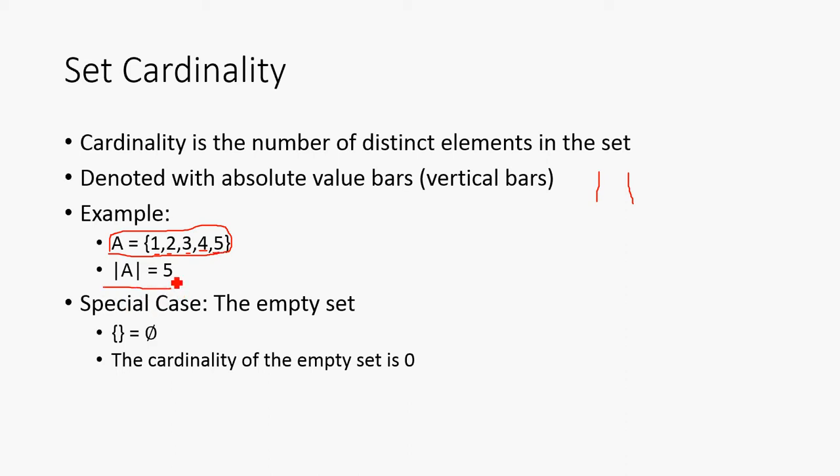So, the special case is the empty set, which is going to be represented by this 0 with a strikethrough, or it can also be represented as a pair of empty braces. And the cardinality of this set is going to be 0.